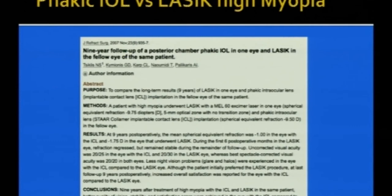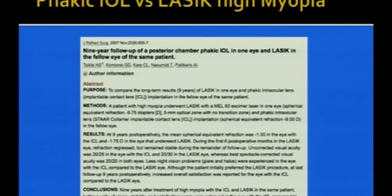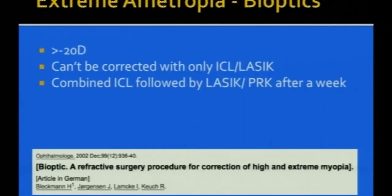A study published by our group compared fakic IOL versus LASIK over 9 years: the LASIK eye regressed to about minus 2 diopters, while the ICL eye was doing extremely well. In certain situations where myopia is low (e.g., minus 4 diopters) but topography is suspicious for keratoconus, you don't touch the cornea — fakic lenses are chosen. In extreme ametropias, bioptics — combining ICL with refractive corneal surgery — can be used.